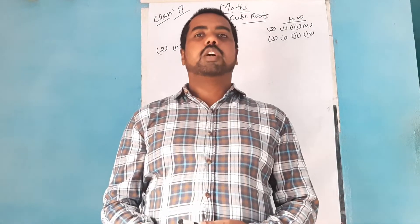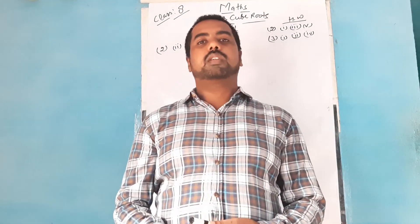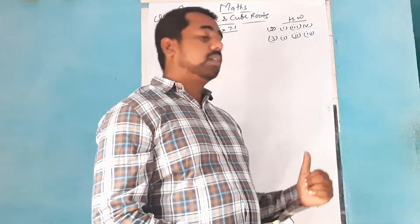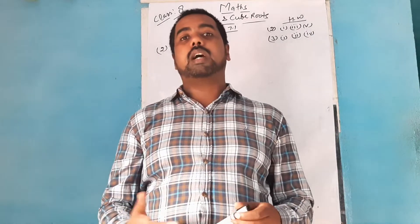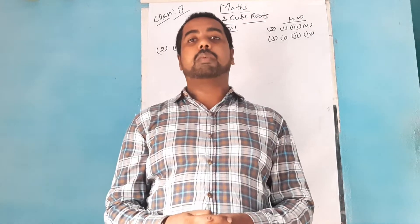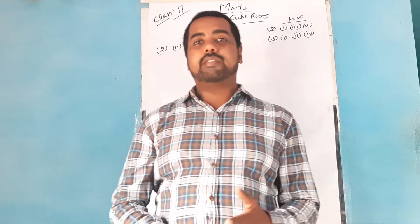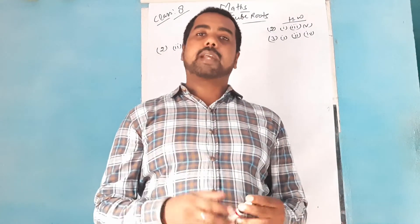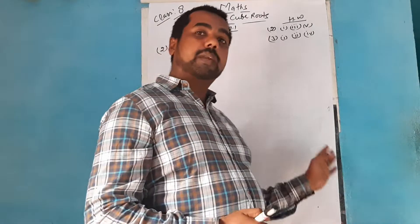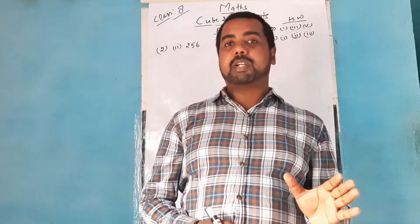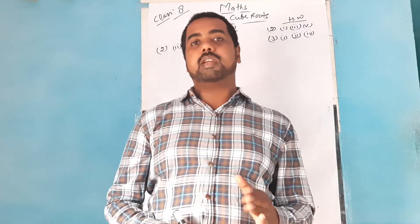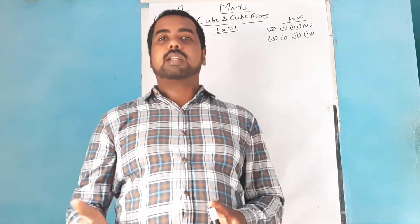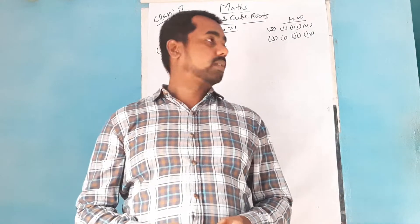Good afternoon. Today I am here to continue further exercise 7.1 where I stopped. In the previous video I told you how to identify a cube number — you apply the method of prime factorization. When you apply prime factorization and the prime factors can be arranged in a pair of 3, we conclude that the given number is a perfect cube number; otherwise it is not a perfect cube.